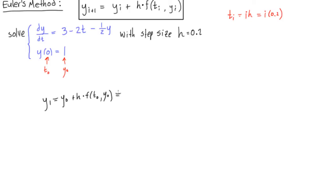Okay, so this is going to be equal to, well we know what y naught is, y naught is 1, plus h is a constant, it's 0.2. And this is going to be times our function evaluated at t naught and y naught. So first of all, we'll have 3 minus 2 times t naught, which is 0, minus 1 half times y naught, which is 1.